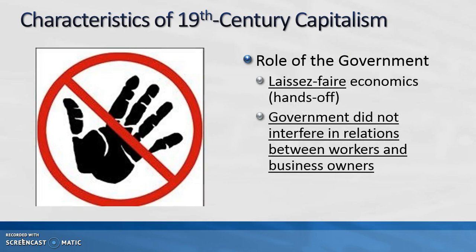In the 19th century, the government had a laissez-faire attitude towards economics — that means hands off. The government did not interfere in the relations between workers and business owners. They did not regulate work hours, wages, or demand safe conditions in factories. Basically, if the government didn't interfere, business owners could do whatever they needed to maximize profit.